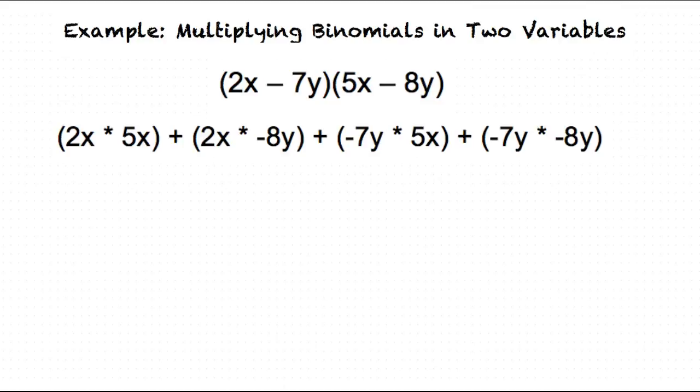5x plus 2x times negative 8y plus negative 7y times 5x plus negative 7y times negative 8y. Now we simplify